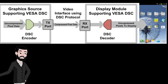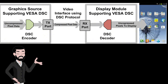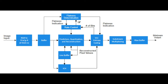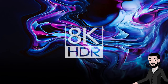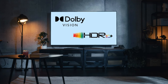DSC is a visually lossless compression algorithm that allows for higher resolution and refresh rates without significantly increasing bandwidth requirements. This enables transmission of 8K at 60Hz or 4K at 120Hz over a single cable, plus HDR.